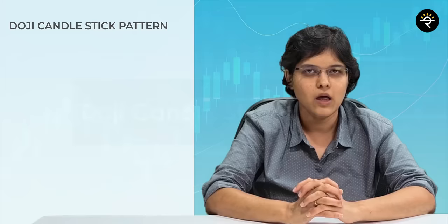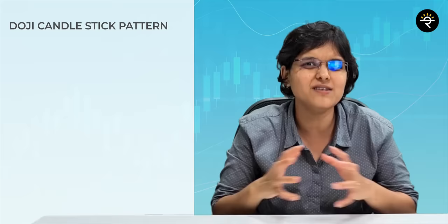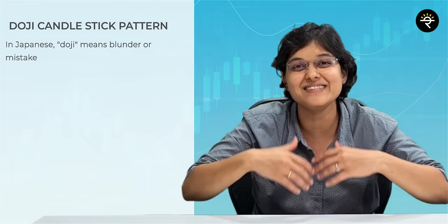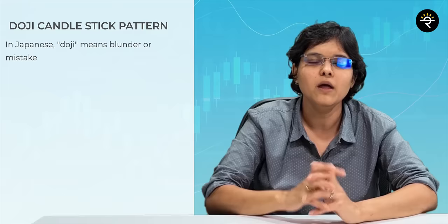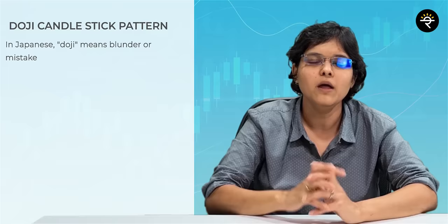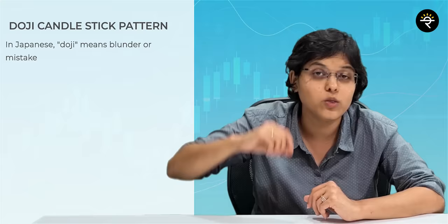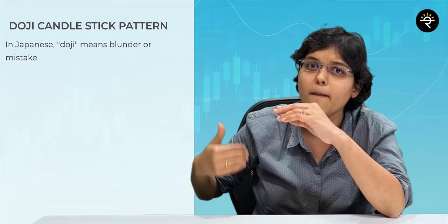While discussing the morning star pattern, I talked about a big red, a big green, and a doji in between. Now what is this doji? Doji in Japanese means a mistake or a blunder — but that has nothing to do with our video. It's just the Japanese meaning of the word doji. Now how is a doji formed? It's a typical case where the opening and closing price is more or less the same. The high price is way above the open or close price and the low is also way below the open or close price.